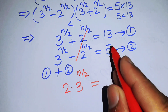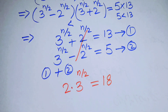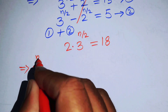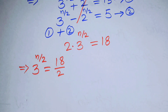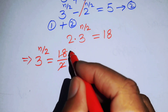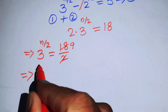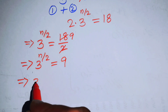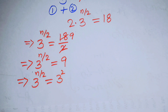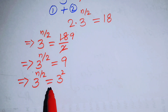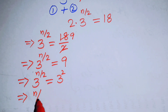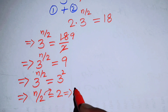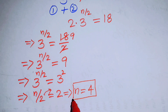Adding gives 2 times 3^(n/2) equals 13 plus 5, which is 18. Moving the 2 to the right-hand side: 3^(n/2) equals 18 over 2, which equals 9. Writing 9 as 3 squared, the bases on both sides are the same, so n over 2 equals 2, giving n equals 4.